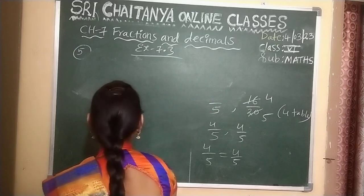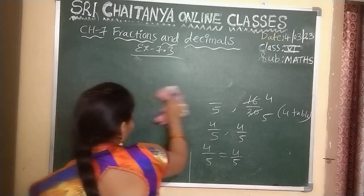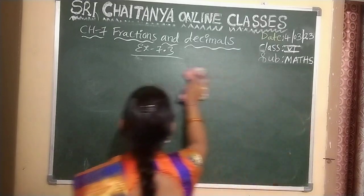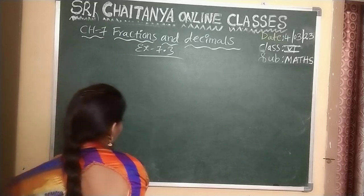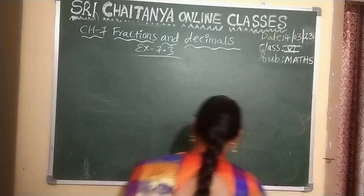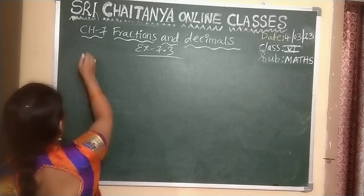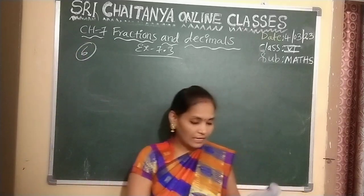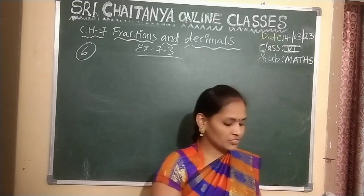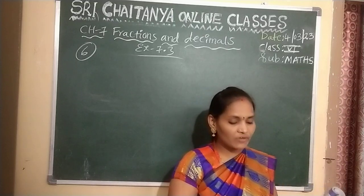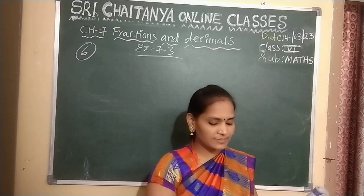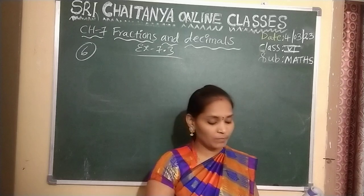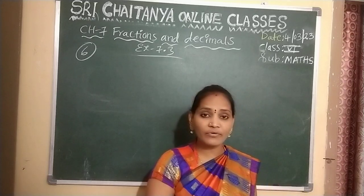Two more bits are also there, same method only. I think you can do them by understanding this. Next, the sixth question. Let me read the question: Hashid read 25 pages of a storybook containing 100 pages. Lalitha read 2 by 5 of the same storybook. Who read less pages? Give a reason.